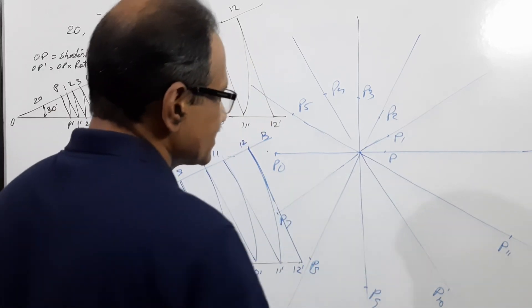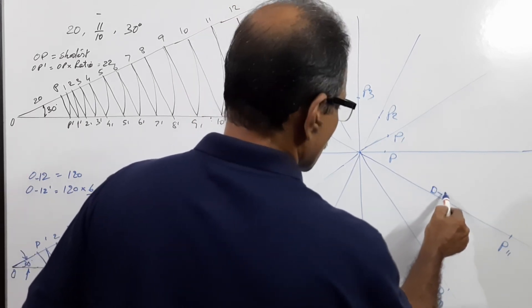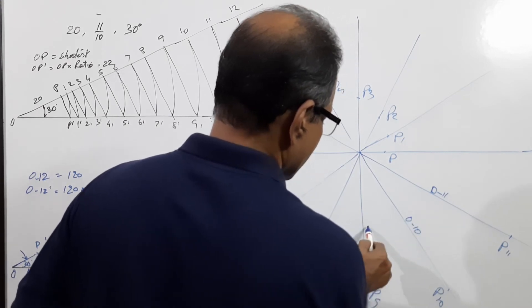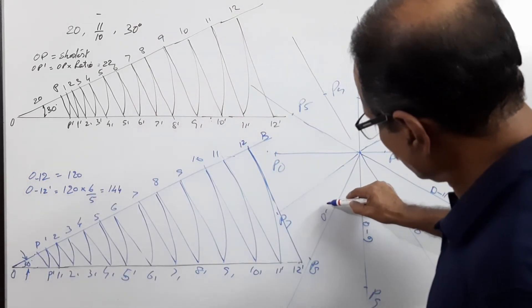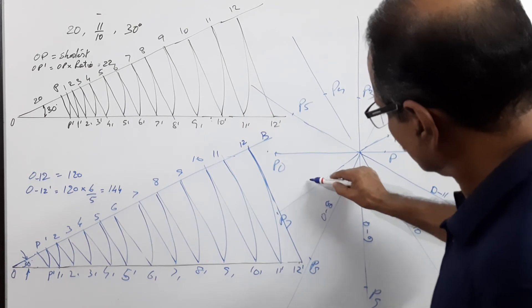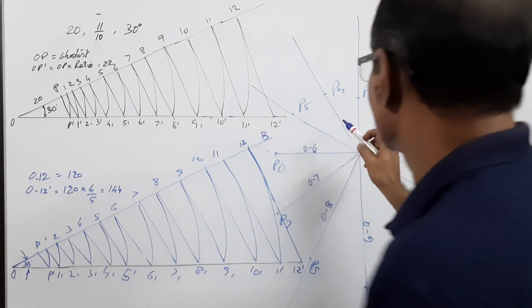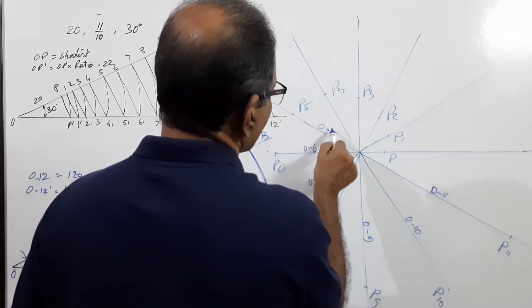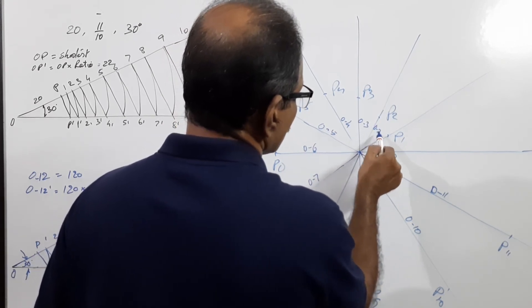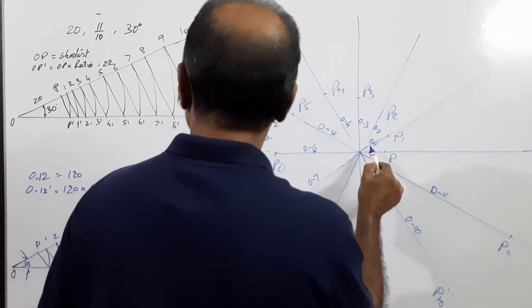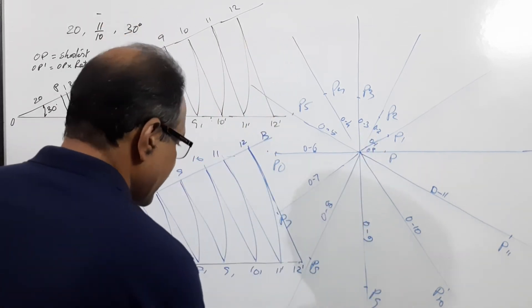What are the distances? This is O11, O10, O9, O8, O7, O6, O5, O4, O3, O2, O1, and OP. Connect these points by a smooth curve.